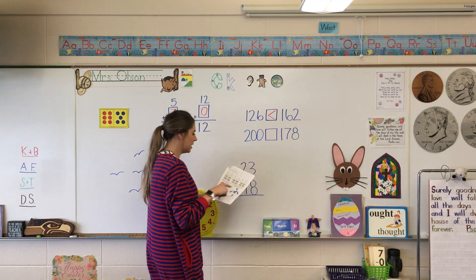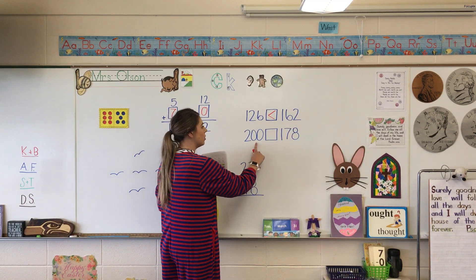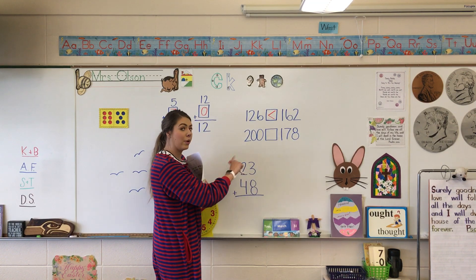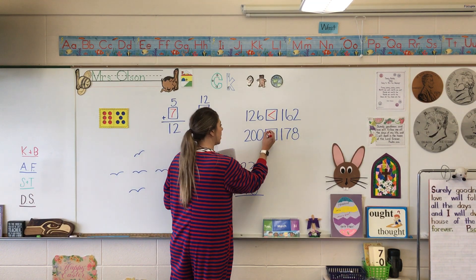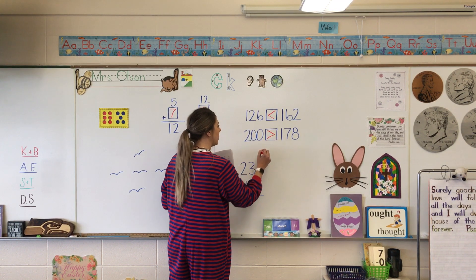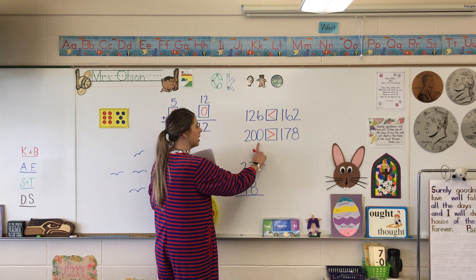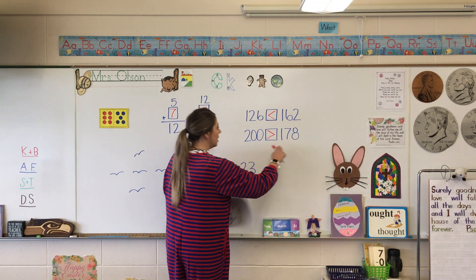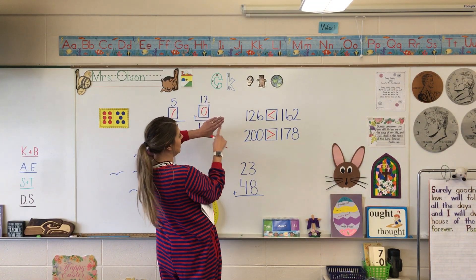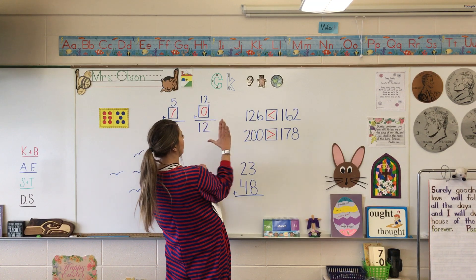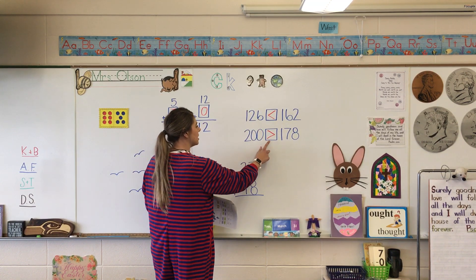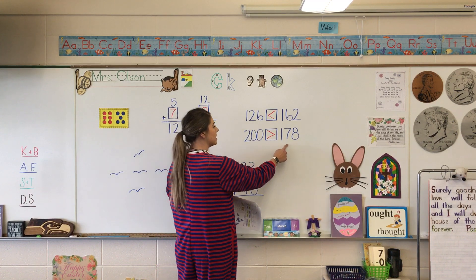And so if we move on to the next one, it says 200 and 178. Now we know that 200 is more, so we're going to put our mouth facing towards that number. This says 200 is greater than 178. So remember, this way is less than, and if you do it this way, it's greater than. So 200 is greater than 178.